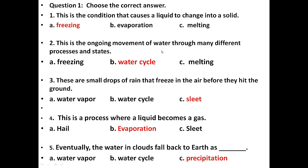Next: This is the ongoing movement of water through many different processes and states. Options are freezing, water cycle, and melting. The answer is water cycle. It begins with evaporation when water is heated up; water vapor moves into the atmosphere and condenses to form clouds and water droplets. Water then returns to the ground as precipitation. The answer is B, water cycle.